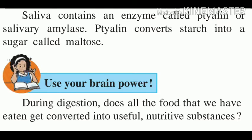During digestion, does all the food that we have eaten get converted into useful nutritive substances? The answer is no. Only the nutritive substances which are useful for our body are absorbed, and others are excreted out as waste material. We call such a process excretion.